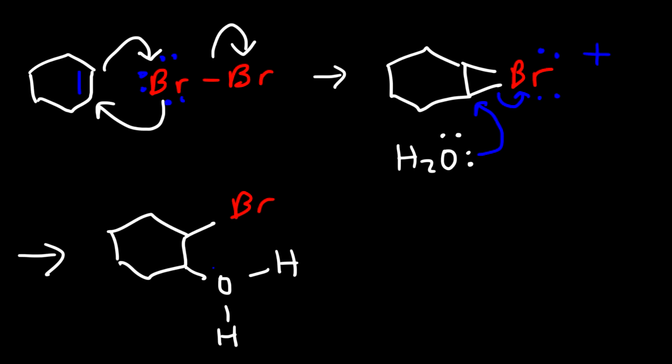And so now we have this intermediate. The oxygen now has three bonds and a plus charge. In the next step, we need to use another water molecule to take off a hydrogen atom. And so we're going to get our halohydrin product. So that's the mechanism for the first step.